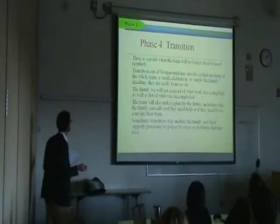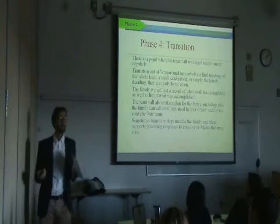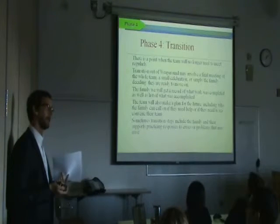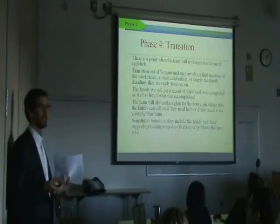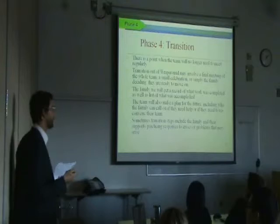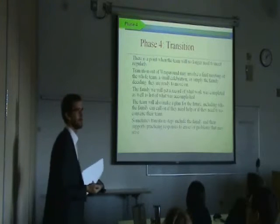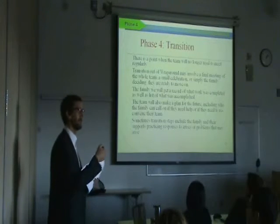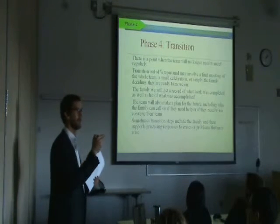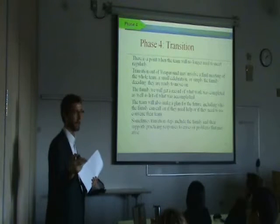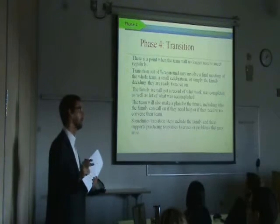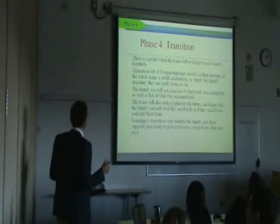Finally, transition. A lot of folks ask: how long does wraparound last? Ideally, there's really not a set point of discharge other than when the team no longer needs to meet regularly and the family can function without the formal wraparound process. Typically, wraparound initiatives try to get teams to transition between 6 and 12 months. For some families it might go longer; for some, much shorter. It's individualized to meeting the family's needs and achieving their goals.